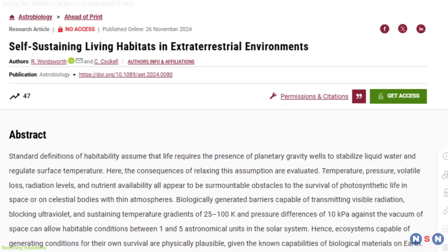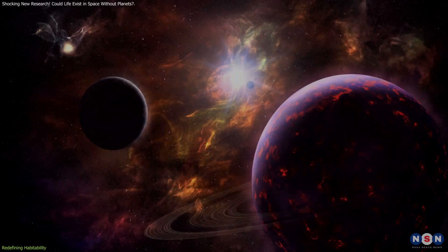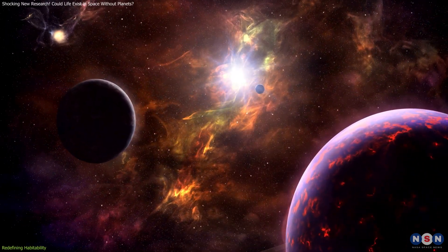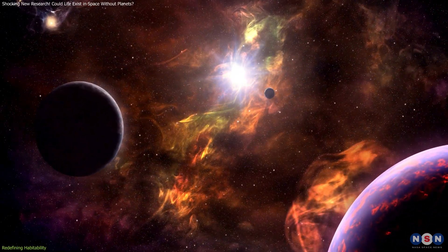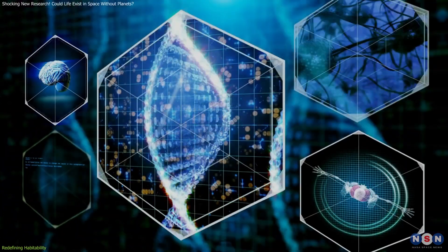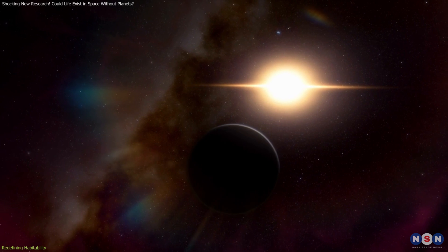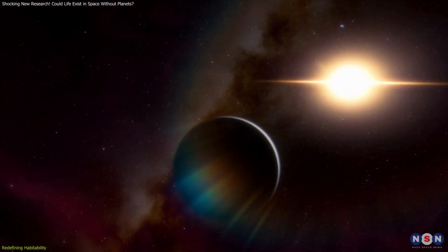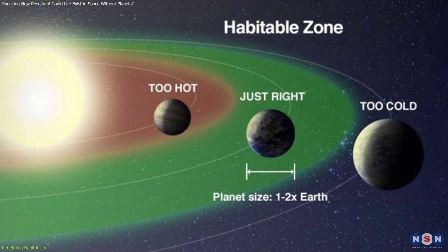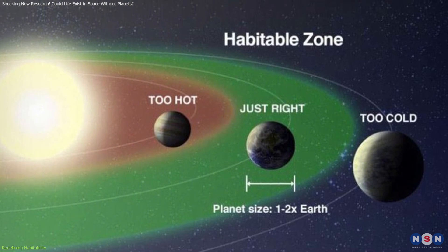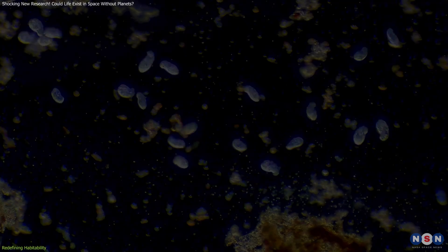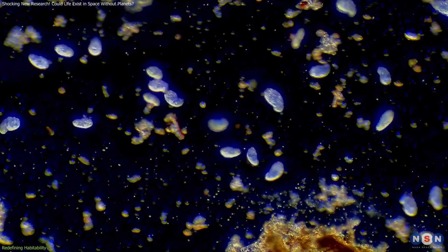The researchers argue that extraterrestrial life forms could similarly develop structures to regulate pressure, temperature, and radiation exposure. Biologically generated barriers could block harmful ultraviolet rays while allowing light necessary for photosynthesis.